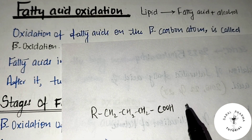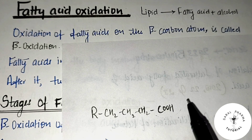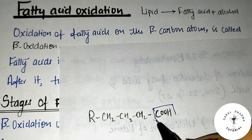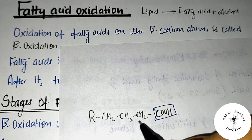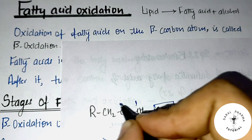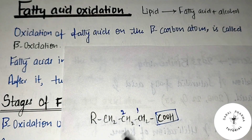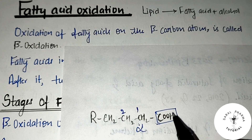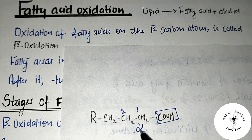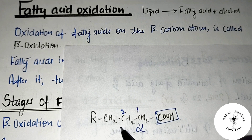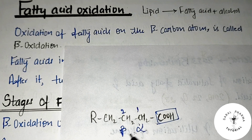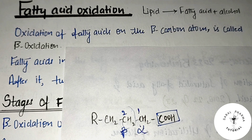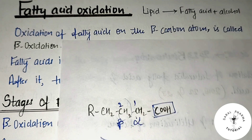This is the fatty acid structure. Carboxyl group is present in fatty acid as the functional group. When we connect to the first carbon and second carbon — the first carbon is called alpha carbon, and the next carbon is called beta carbon. Oxidation occurring at the beta carbon is why this process is called beta-oxidation.